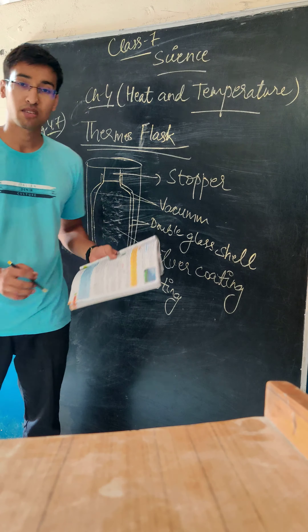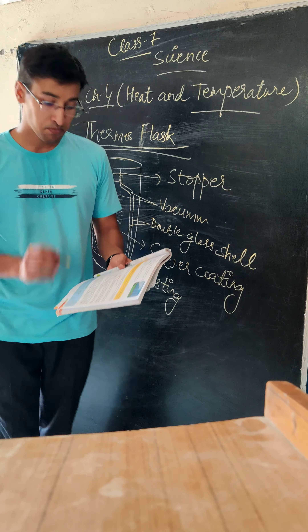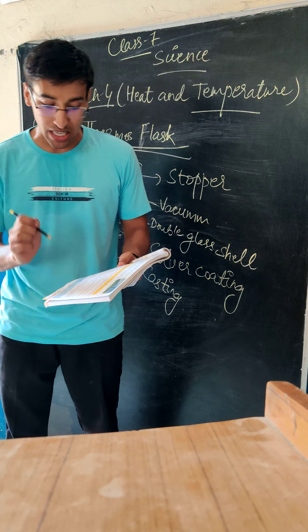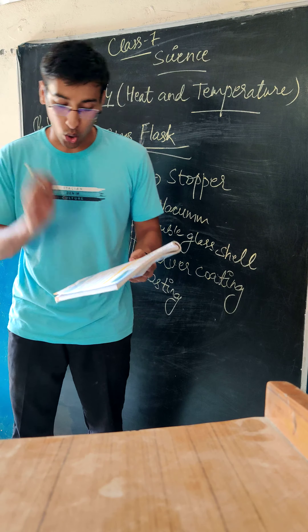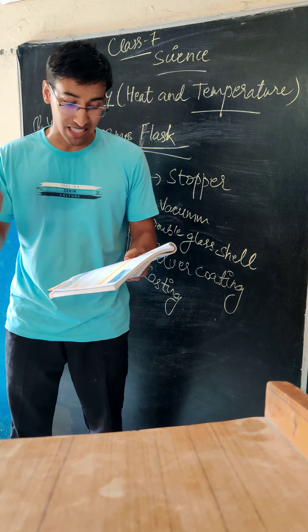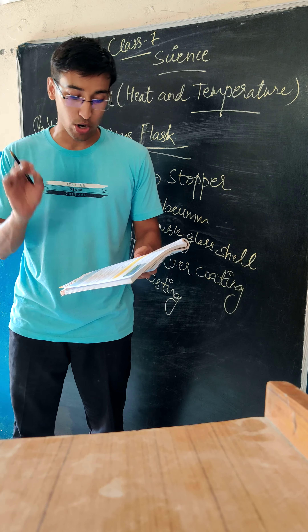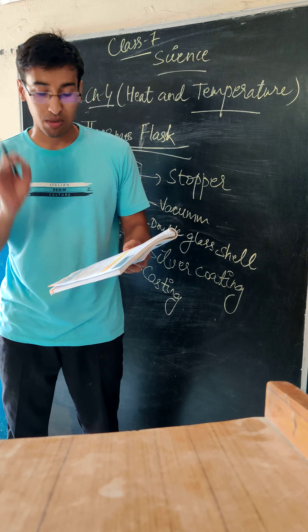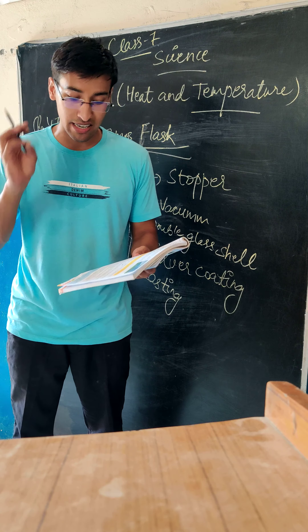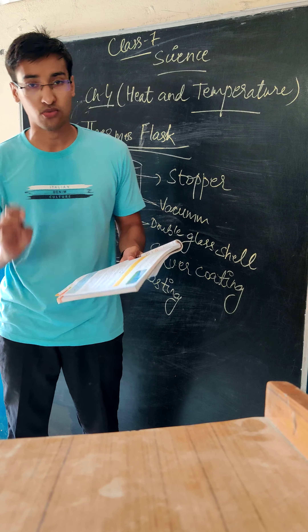On page 47, thermos flask: the vessel which keeps a hot liquid hot and a cold liquid cold, by minimizing loss or gain of heat by the process of conduction, convection and radiation. This is what a thermos flask is.